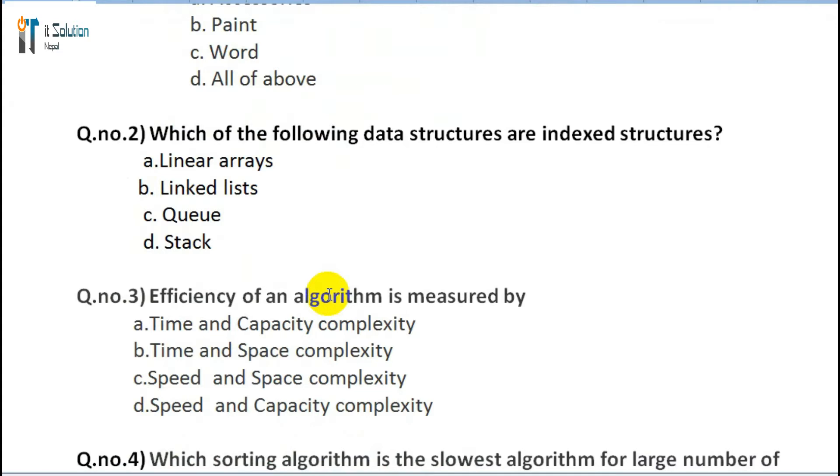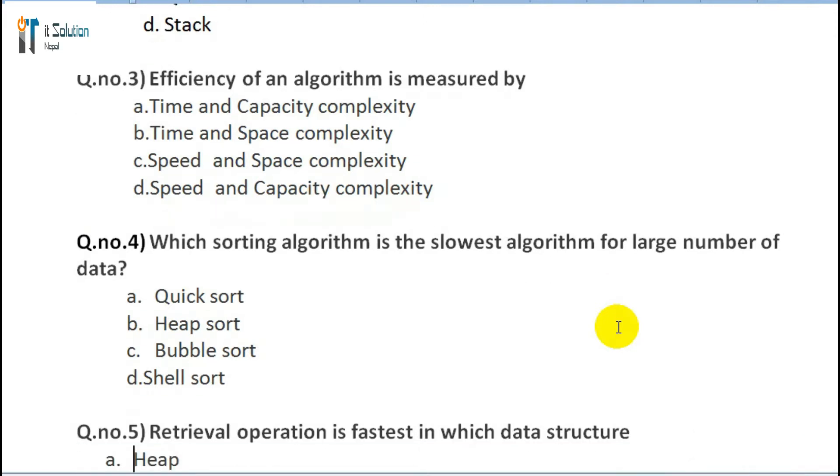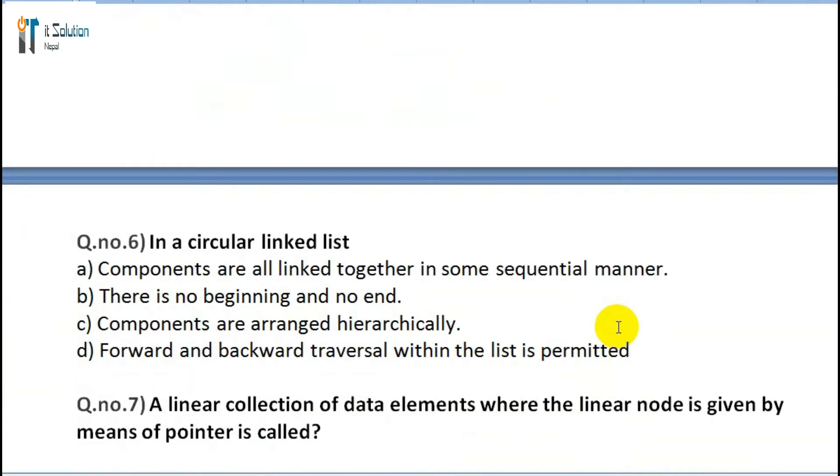Question 4: Which sorting algorithm is the slowest for large number of data? A) Quick sort, B) Heap sort, C) Bubble sort, D) Shell sort. Question 5: Retrieval operation is fastest in which data structure? A) Heap, B) Stack, C) Linked list, D) None.